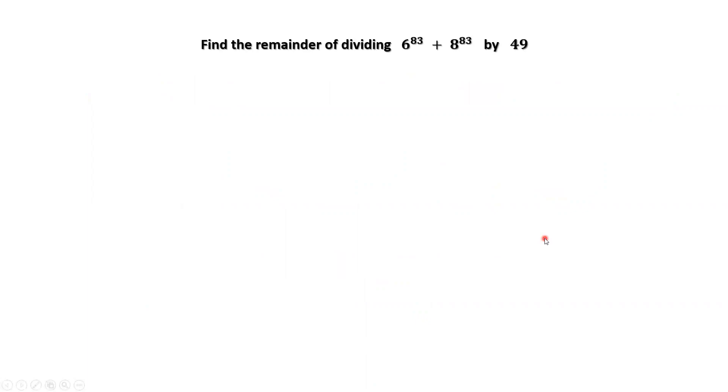How to solve this question? Let's look at 49. 49 equals 7 squared. What is the relationship among 6, 8 with 7? 6 is 7 minus 1. 8 is 7 plus 1.